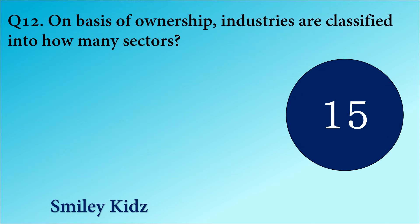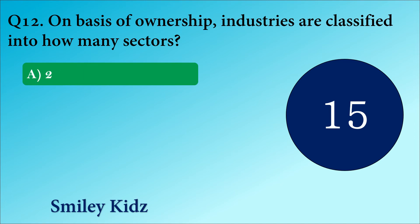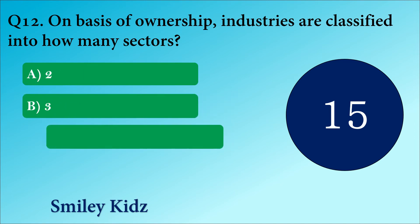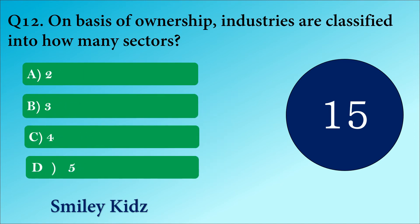Question number 12. On the basis of ownership, industries are classified into how many sectors? The options are A. 2, B. 3, C. 4 or D. 5.